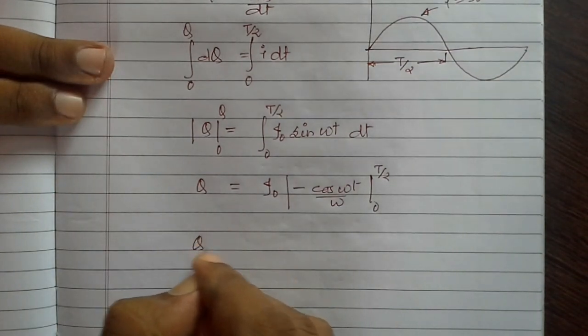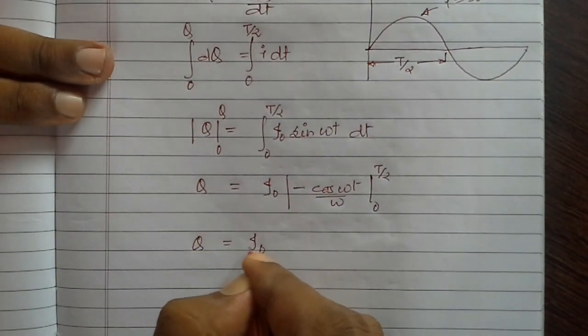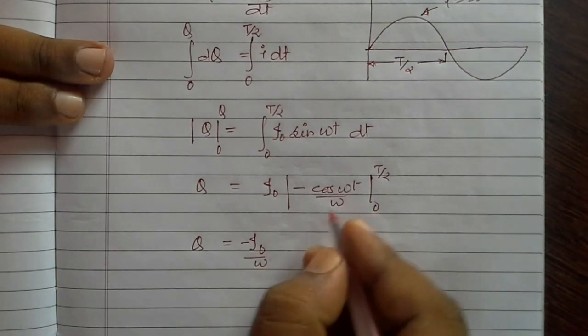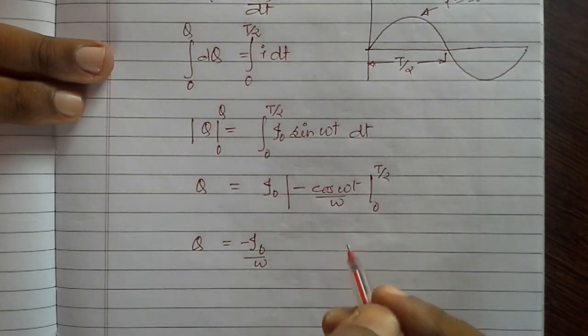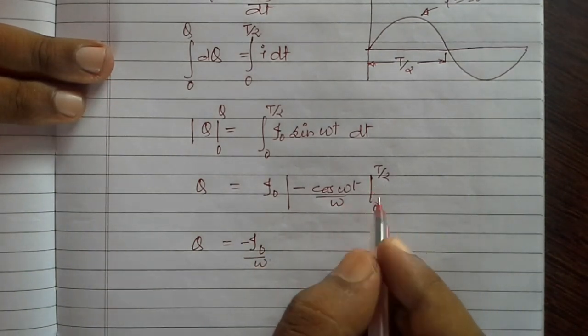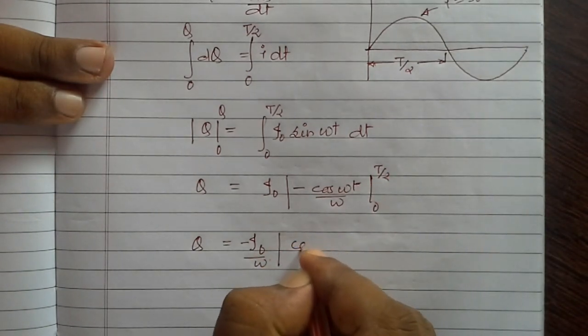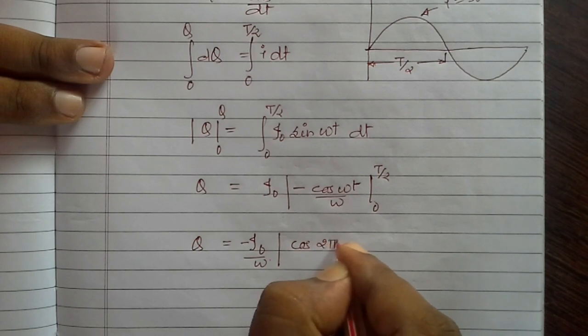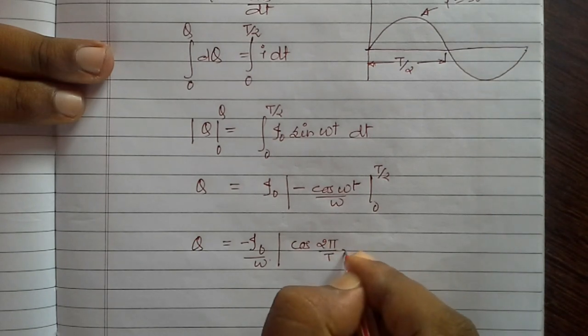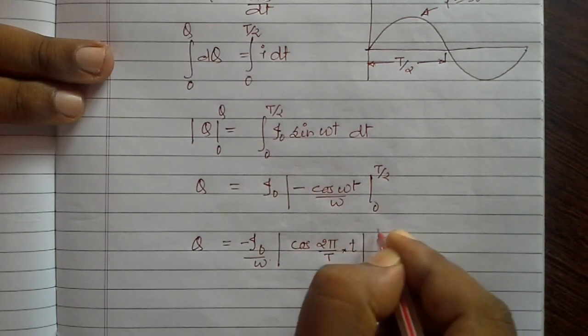We can take out minus i0 by omega and put the upper limit and the lower limit of t. It will come to be minus i0 by omega cos 2 pi by T into t, varying from 0 to T by 2.